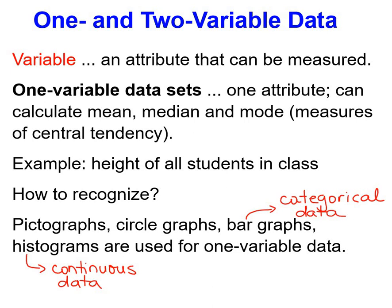So what is a variable? It's an attribute that can be measured. One variable data sets have one attribute. You can calculate the mean, the median, and the mode.